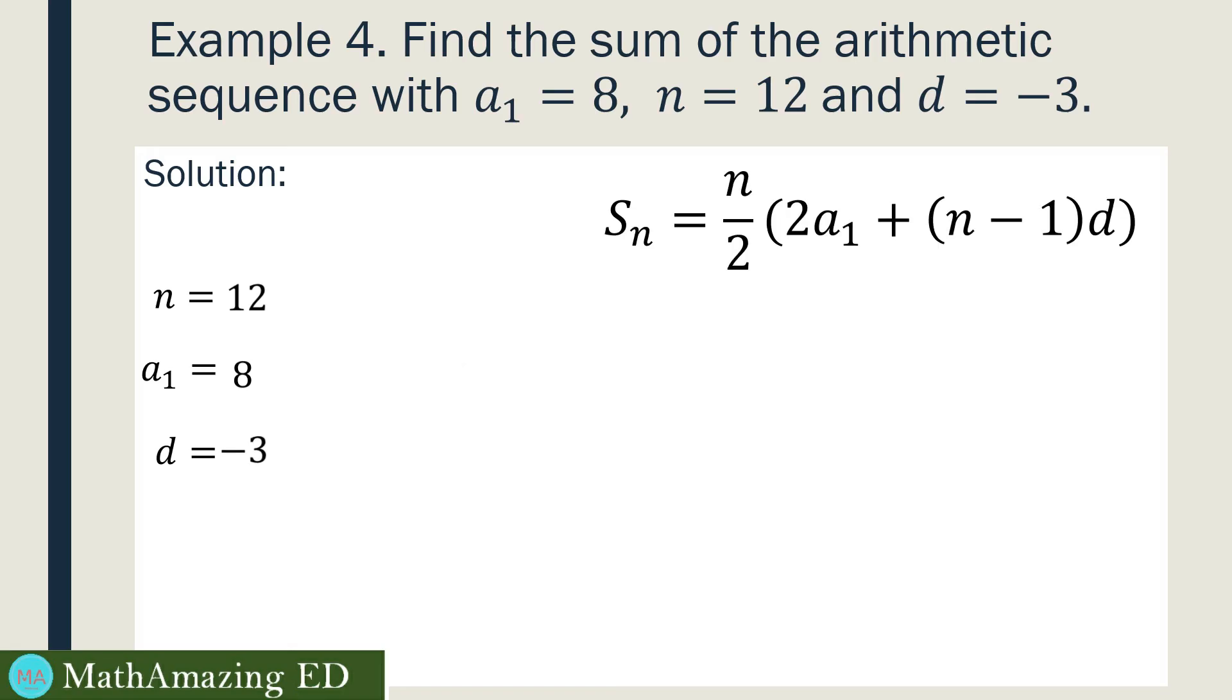And then, now we will substitute. So for our n, it's 12. So you have 12 over 2 times quantity 2 multiplied to a sub 1, or the first term, which is 8. And then our d is negative 3. Please be careful in the substitution process. Once you substitute the wrong value, then your answer would be incorrect. And then simplify the indicated operation. 12 divided by 2 is just 6.